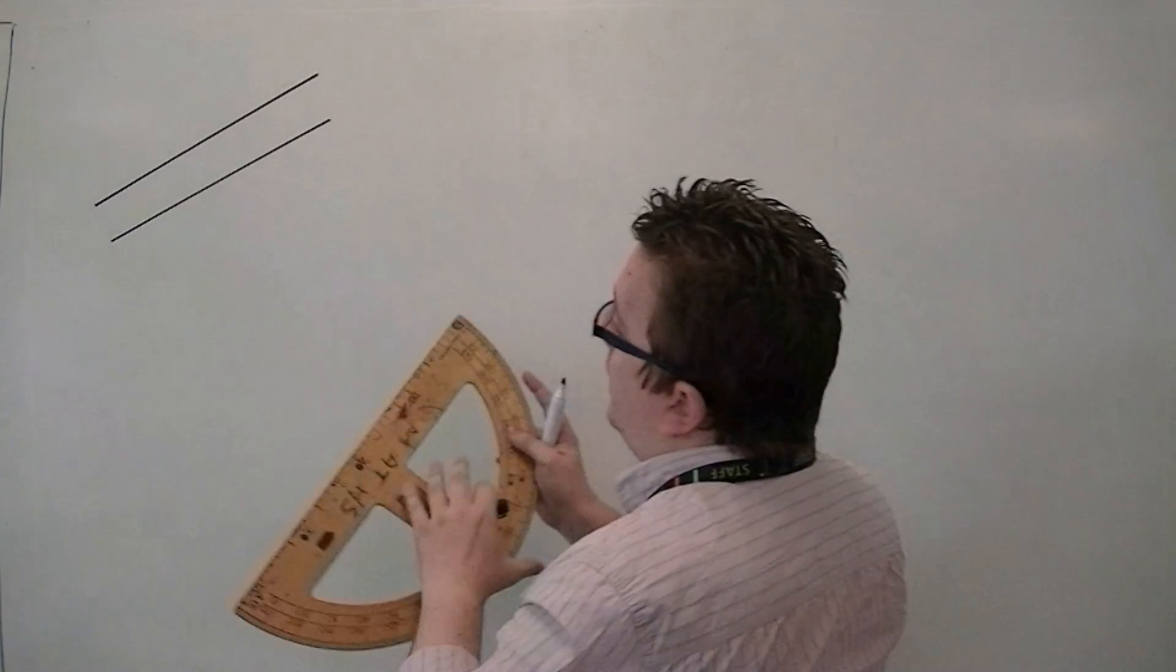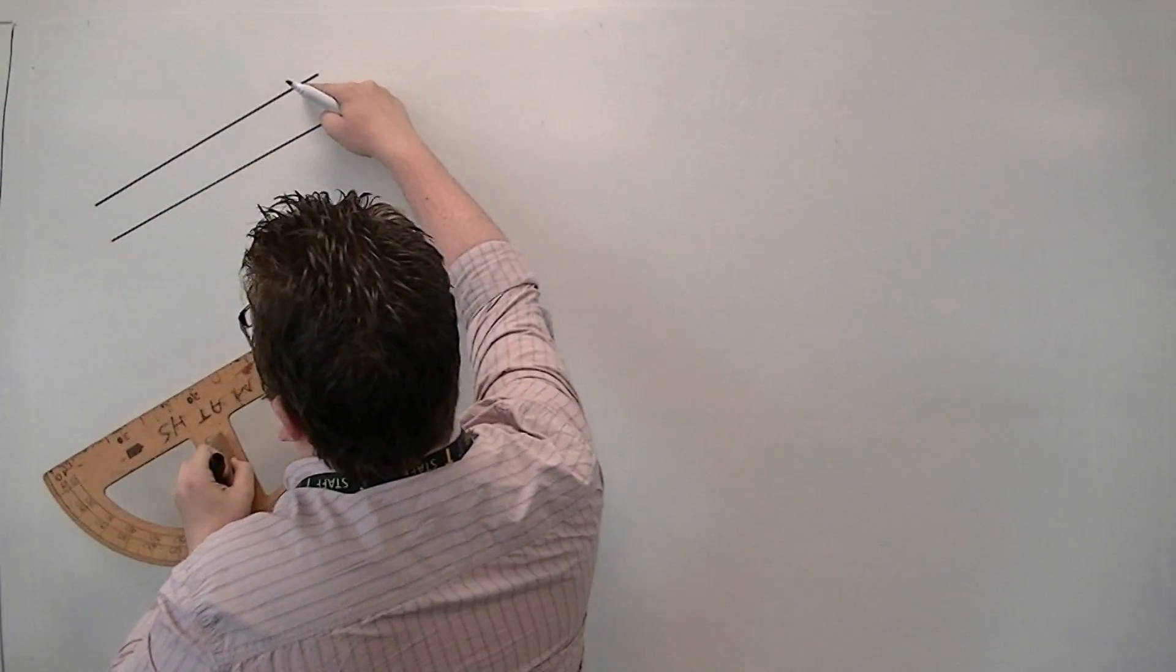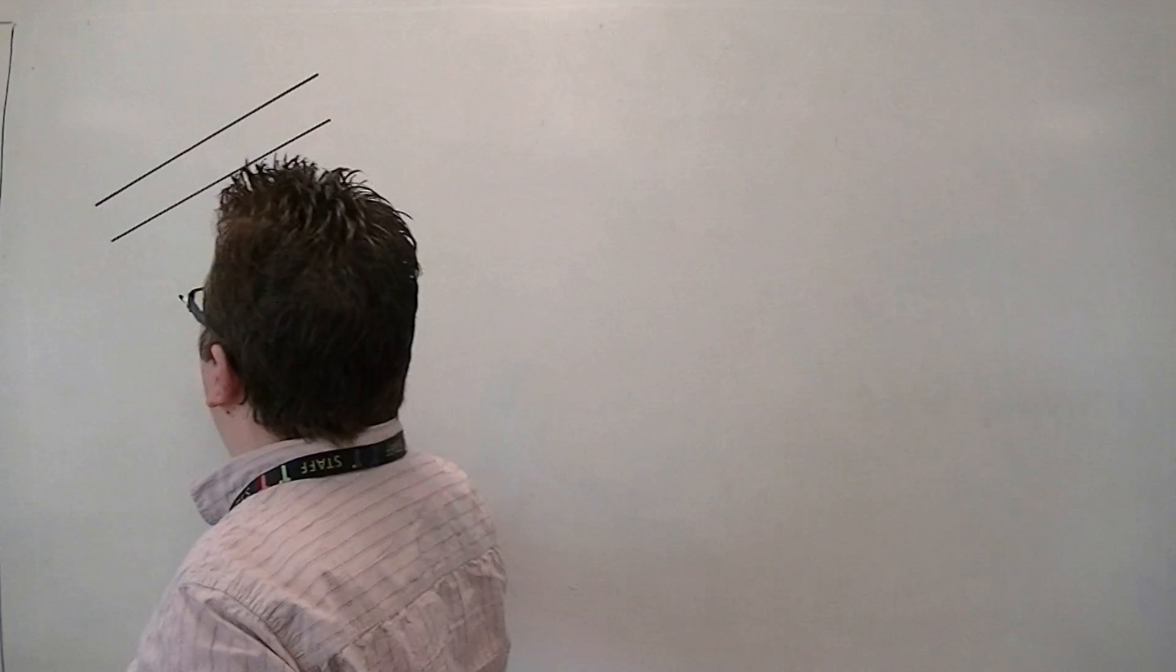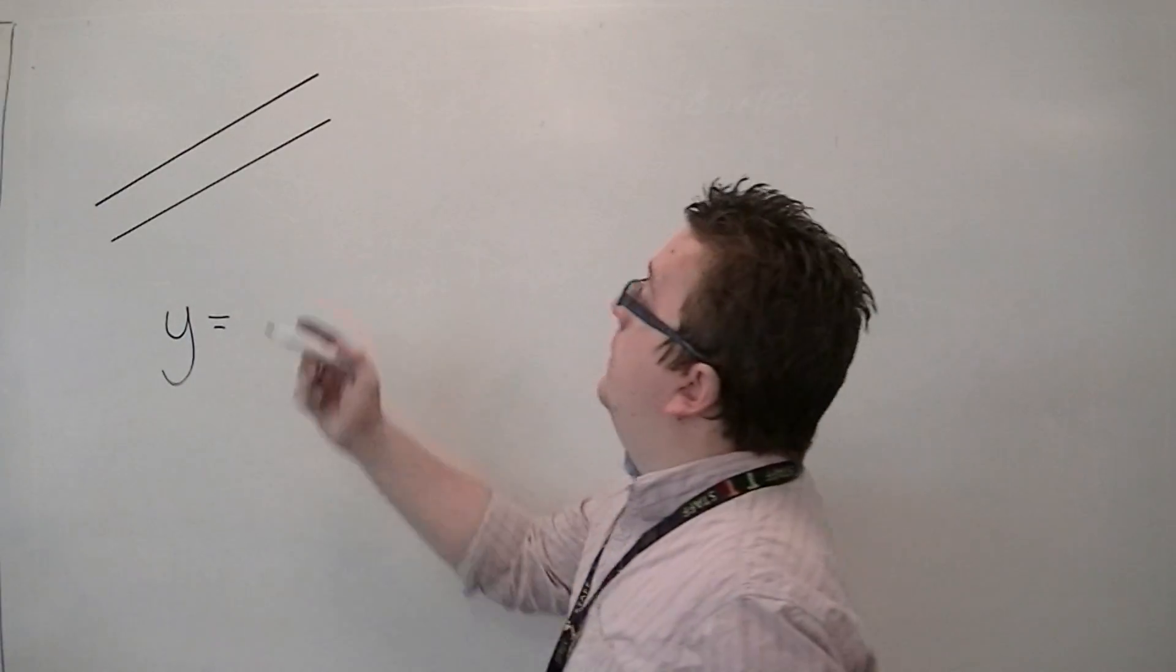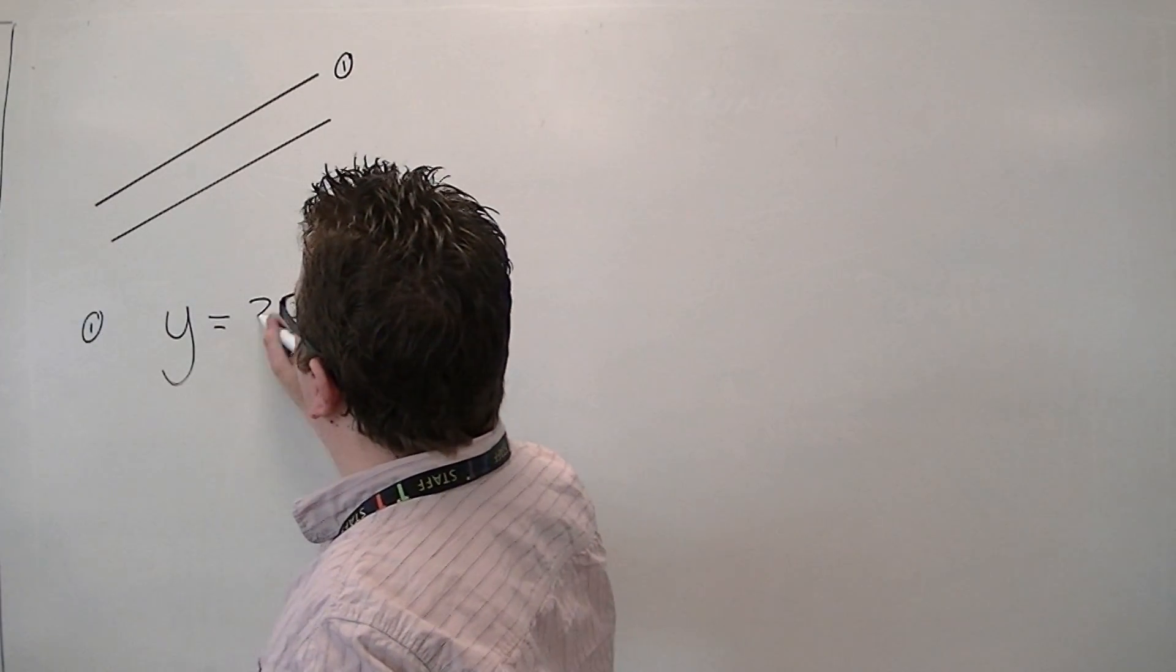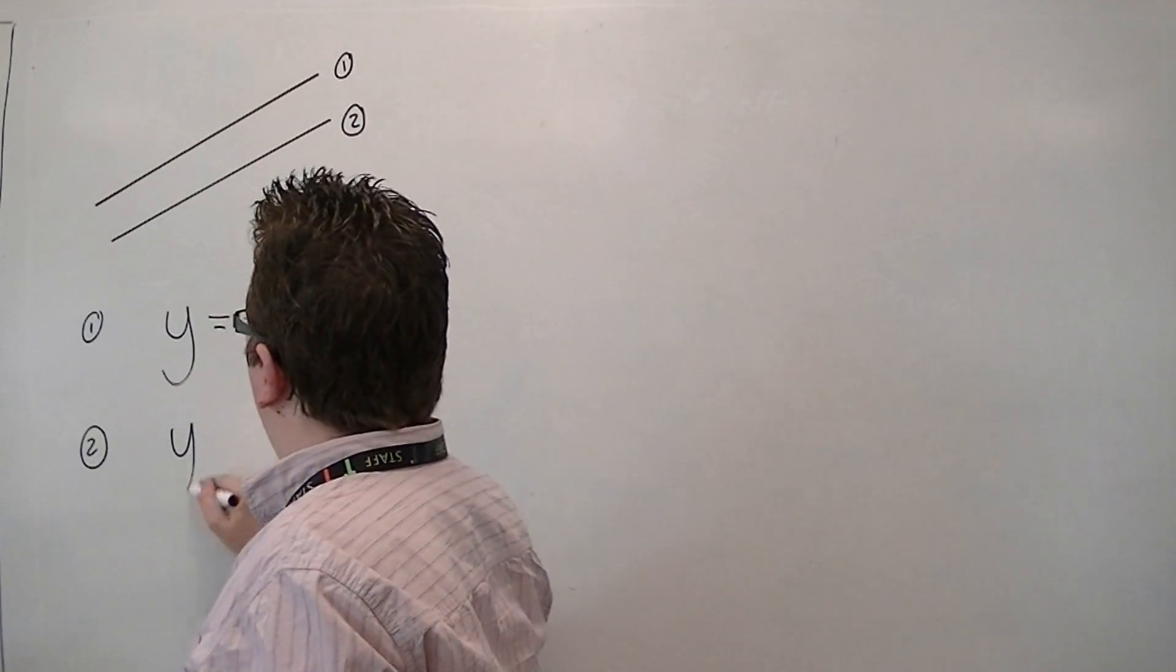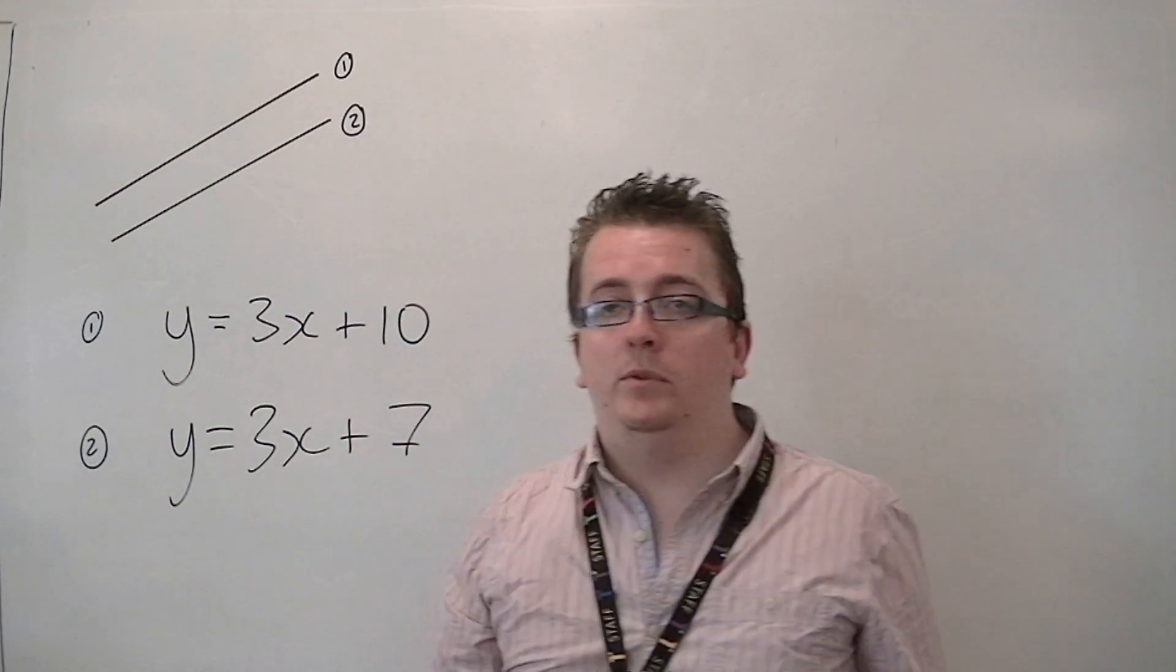So really, it's just a case of, they both have the same gradient, but this one has been moved up further than that one. So if they have the same gradient, let's say they both have the gradient 3, then this one could be y equals 3x plus 10, while this one, the second one, could be y equals 3x plus 7, for example.